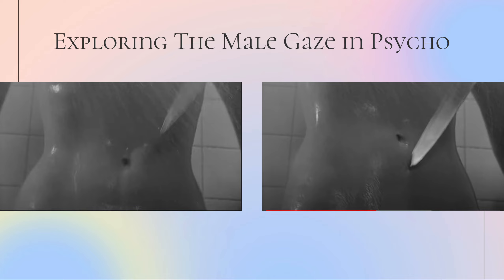This type of blatant objectification can be seen clearly in Psycho, a classic Hollywood film directed by Alfred Hitchcock. These two shots are from the famous shower scene where the main female protagonist Marion gets murdered by Norman Bates while she is naked taking a shower at the Bates Motel. In this shot we only see the camera focus on Marion's stomach — it dismembers her body parts, reducing her to only a portion of her body. We don't see her head or the rest of her body; the shot cuts off everything else.